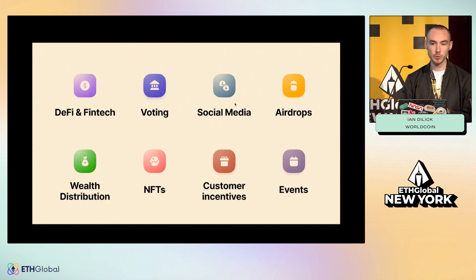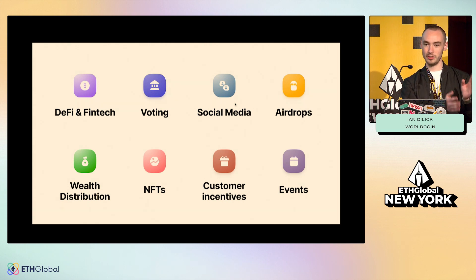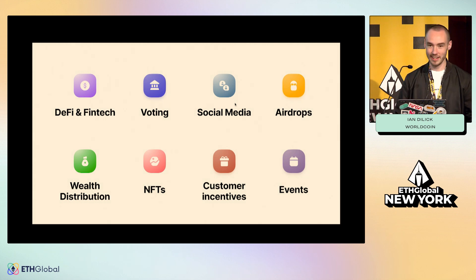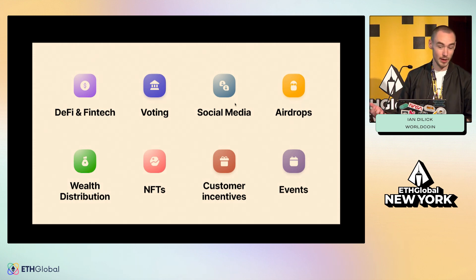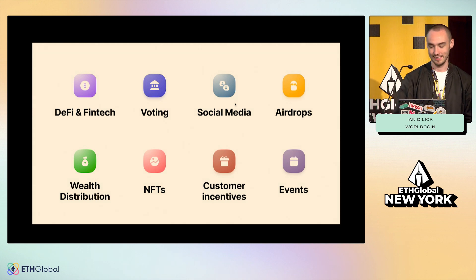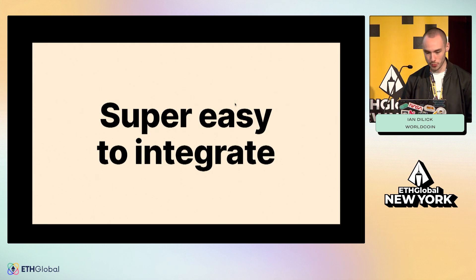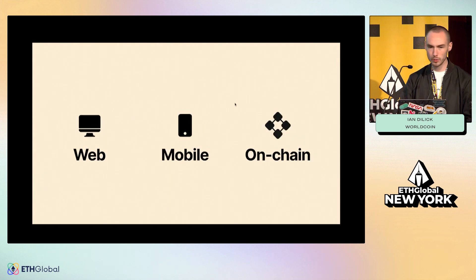World ID has lots of different use cases. Voting is one that makes a lot of sense — you want to know that the person voting is actually a human and not a bot, and that they only get to vote once on each proposal. As an added bonus, you can't correlate two different votes on two different proposals back to the same person. Social media — again, you want to know that it's not a bot. Customer incentives is one I find particularly interesting: maybe you want to give your user a sign-up discount, and with World ID, maybe they'd be willing to give you a three-month free trial because they know you're only getting it one time. We've also designed World ID to be super easy to integrate — you can use it on the web, on mobile, and on chain.